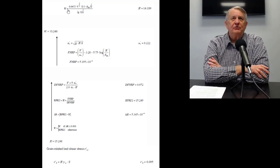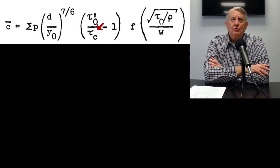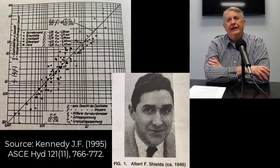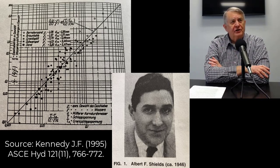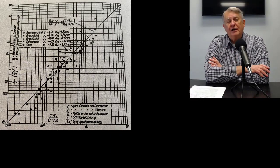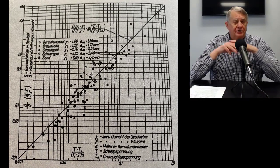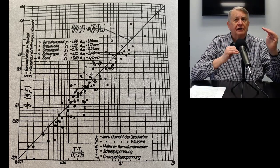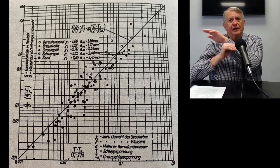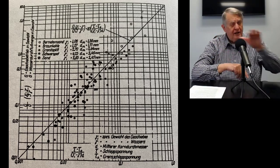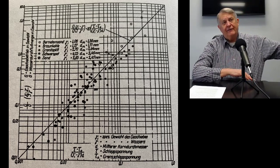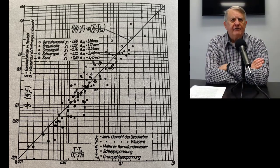There was another issue with critical shear stress. When Shields did his work in Germany, he didn't actually measure the critical shear stress directly. He measured sediment transport, got a relationship between sediment transport and shear stress, and then took a bunch of data, got a curve, and linearly extrapolated back to the zero point — and that was the critical shear stress. So he never actually measured it directly.